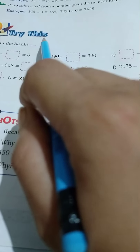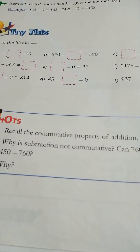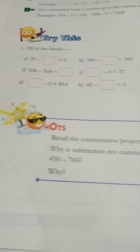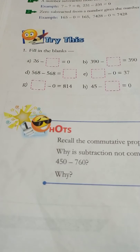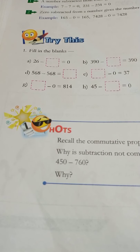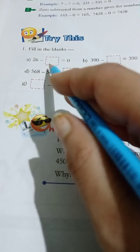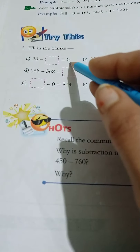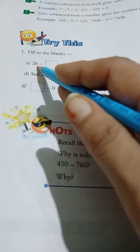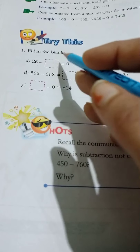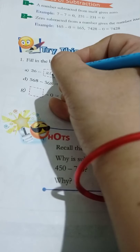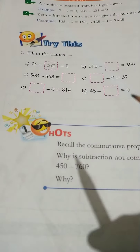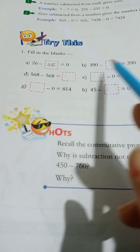So let's start. Try this page, number 54. Fill in the blanks. 26 minus blank is equal to 0. Here we use rule number 1: a number subtracted from itself gives 0. So 26 minus 26 is equal to 0.